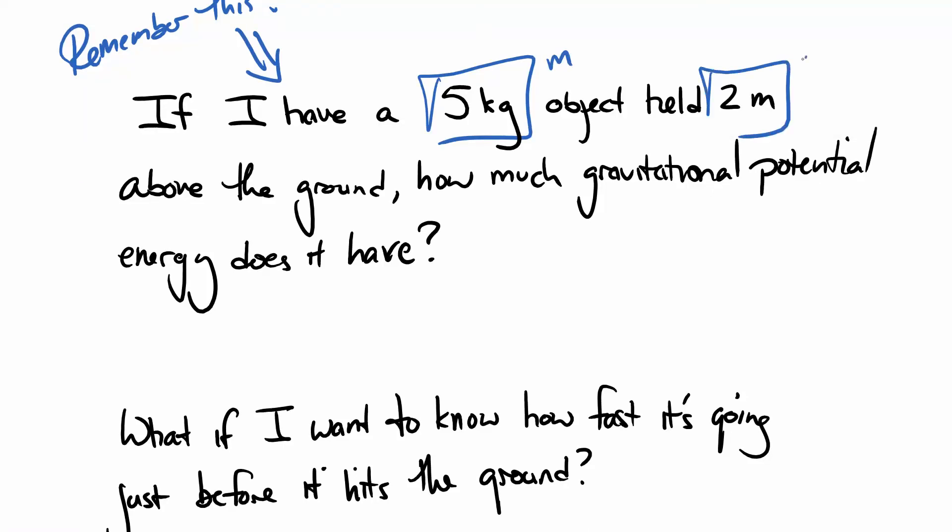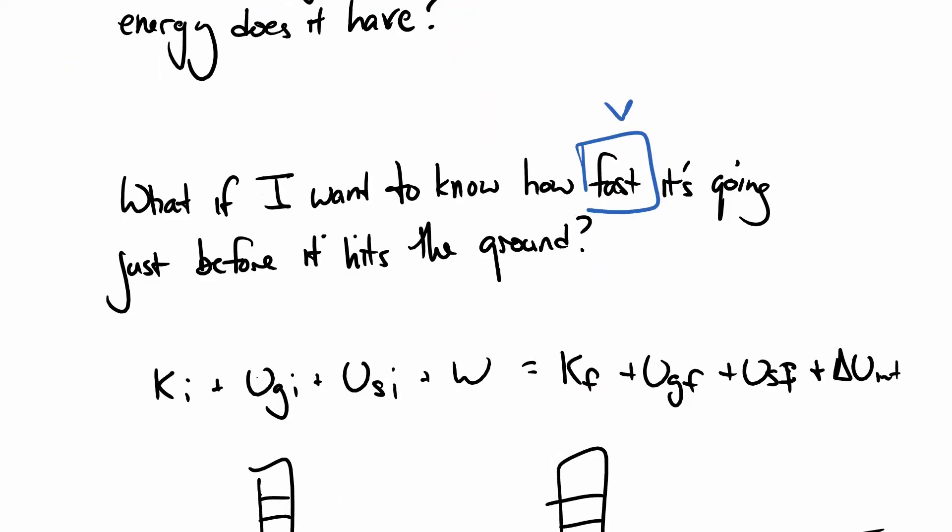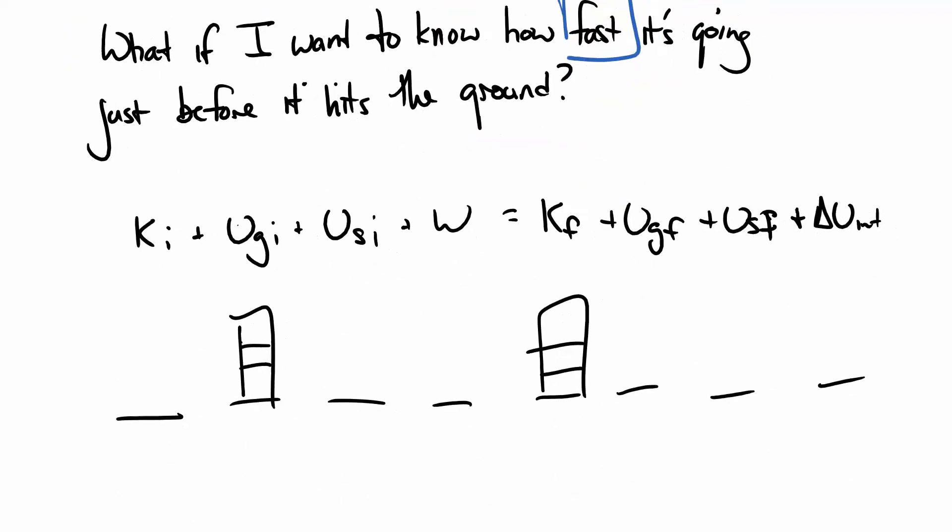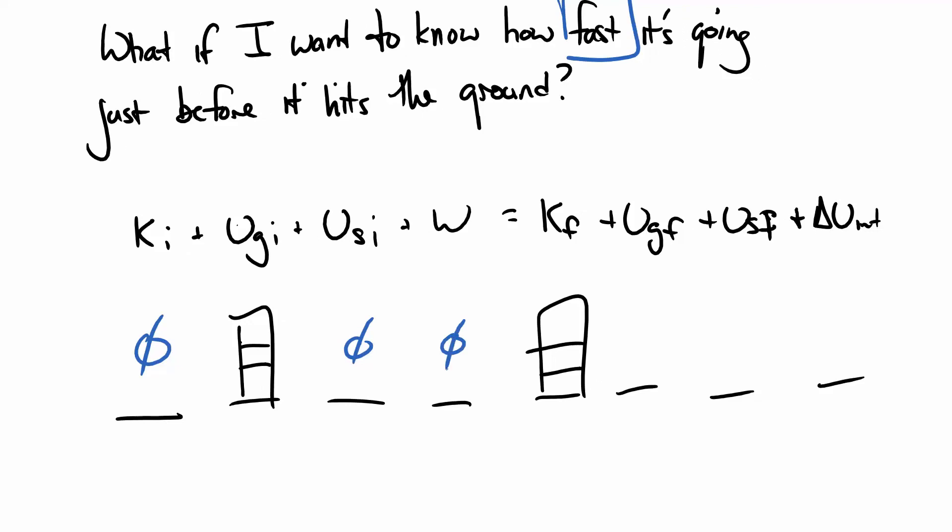What if I want to know how fast it's going just before it hits the ground? So if I look at this, I can see that I have a mass, I have a height, I have how fast. So I'm going to look at this thing and make a bar graph for it. I'm starting two meters above the ground. I'm not moving. No springs. Nothing doing work-wise. Afterwards, it's at the lowest point. Still no springs. As far as I know, nothing got hot.